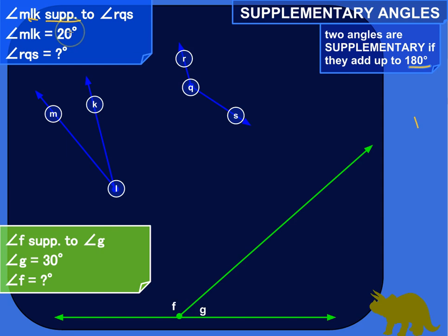Okay, angle MLK is equal to 20 degrees. So based on what we're given, and I always recommend just write down and draw pictures of the information. Write down what you know. Draw what you know. So we know that this angle is 20 degrees. Angle RQS is question mark. We don't know what that is.